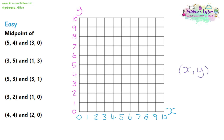Looking at question one, we find the midpoint of (5, 4) and (3, 0). So we'll look at (5, 4) first and label it on the diagram. 5 on the x-axis and 4 on the y-axis. Below the green dot you can see the 5 corresponding to the x-axis, and to the left you can see the 4 on the y-axis.